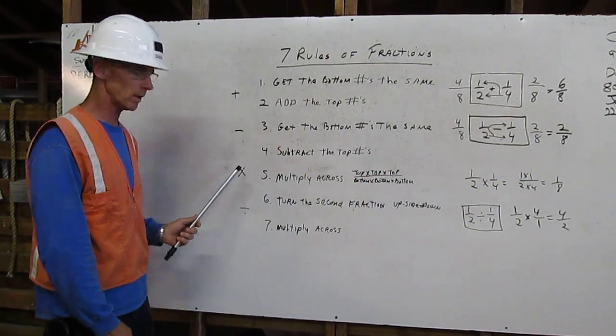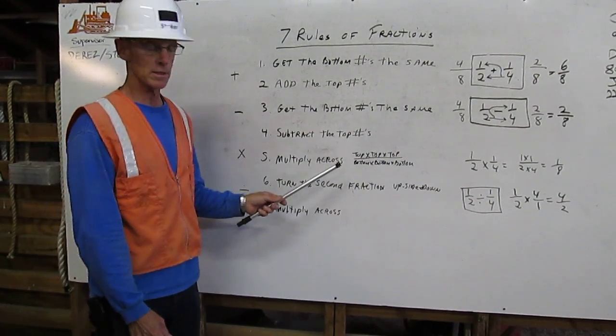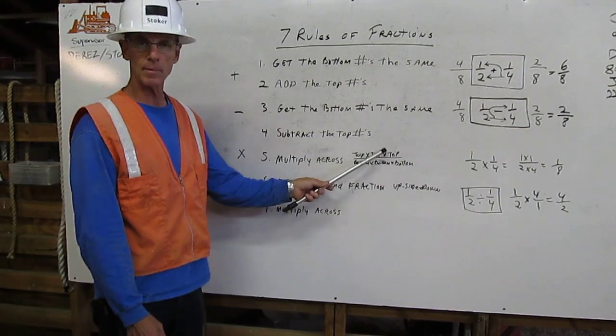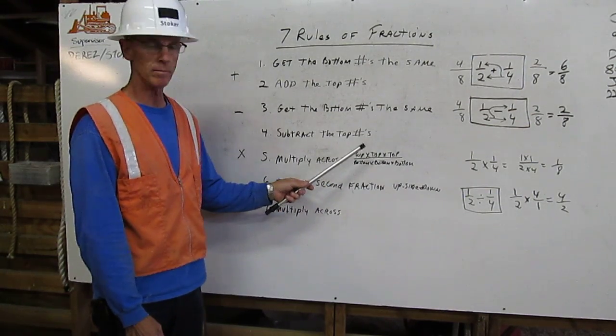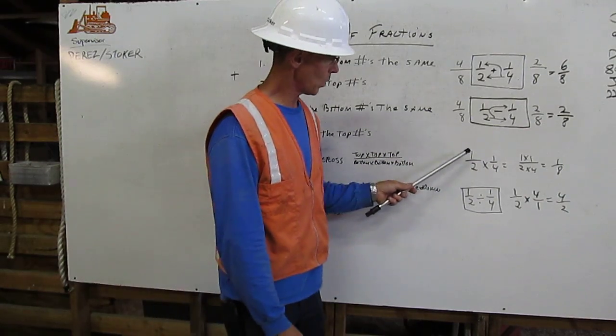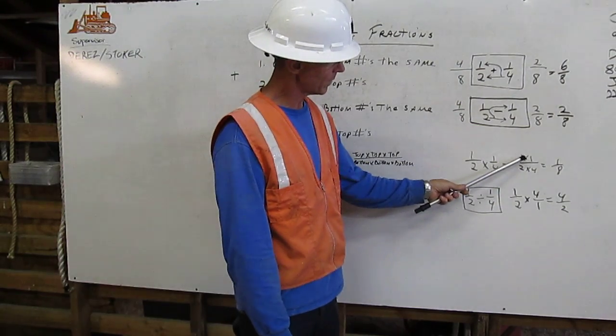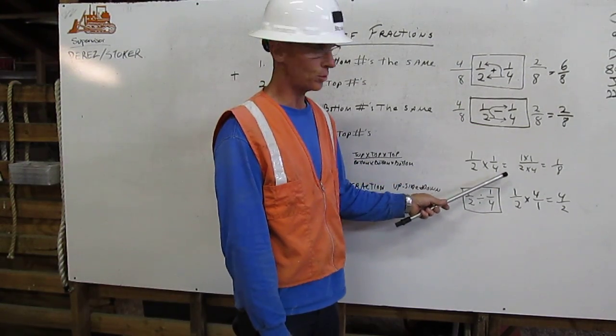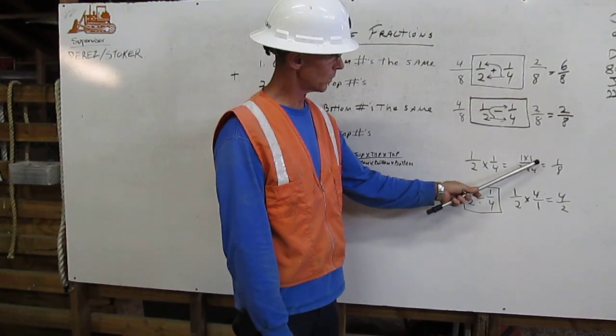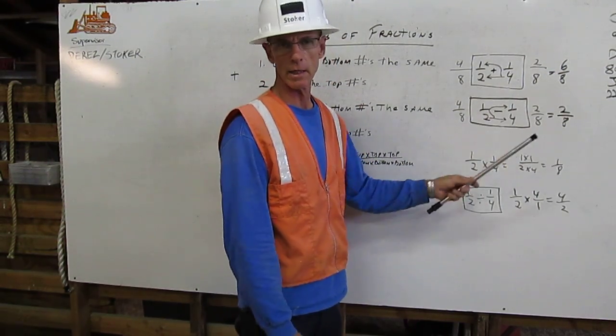Now we'll explain the rule for multiplication. Multiply across. Top times top over bottom times bottom. Here's our example. One-half times one-fourth equals one times one over two times four equals one. Two times four equals eight equals one-eighth.